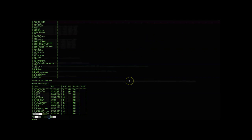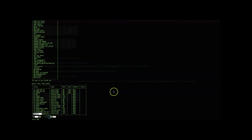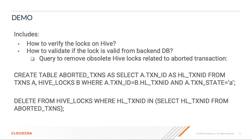To delete obsolete locks from the Hive locks table, first you need to create a table with the aborted transactions as specified in the presentation. We create a table that includes aborted transactions where the transaction state is 'A' — that is, aborted. Once you have all the transaction IDs related to that, you can delete the particular locks associated with those transaction IDs.